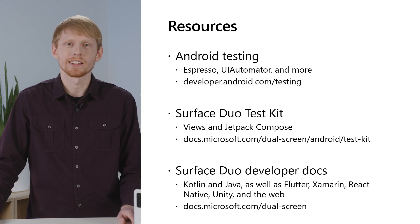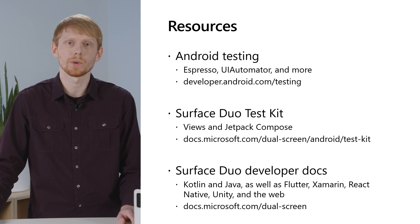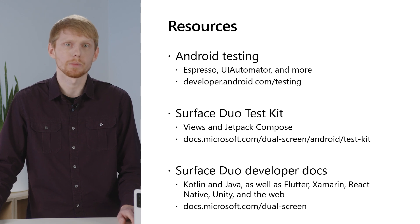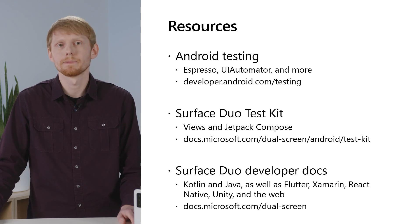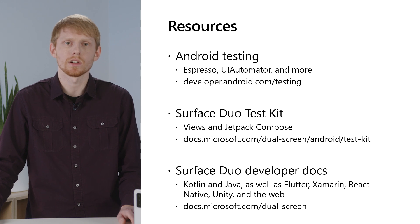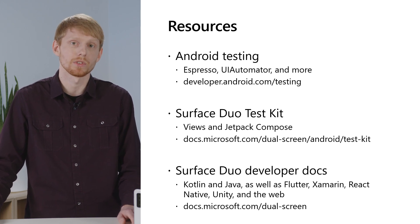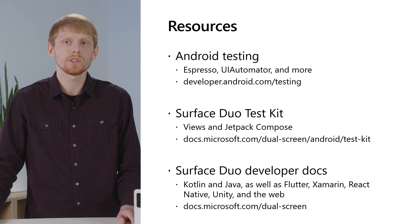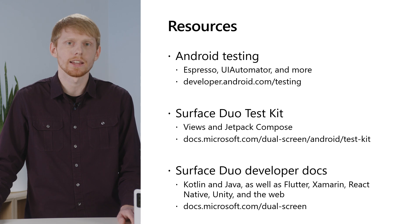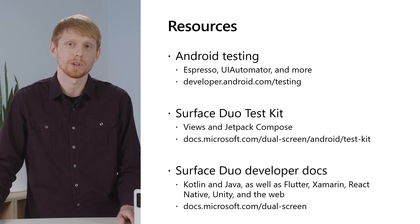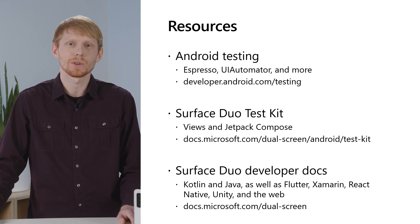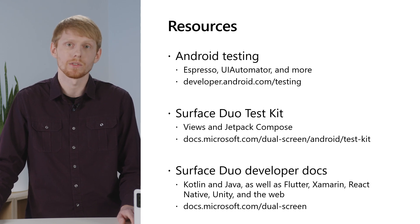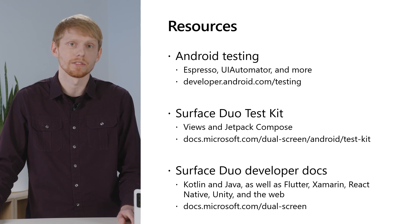UI test and UI Automator provide the foundations to write tests for both simple and complex scenarios, and the Surface Duo test kit adds dual screen specific helpers like the ability to span the app. Automated testing is a great strategy for maintaining app quality, and adding tests for form factors like dual screen and foldable devices means you can be sure your customers continue to have a great experience as your app and the device ecosystem grows. Visit developer.android.com/testing to learn more about UI testing with Espresso, UI Automator, and Jetpack Compose. To add Surface Duo tests to your app, visit our test kit on docs.microsoft.com. The test kit package contains helper methods to make testing easier, regardless of whether you use Android Views or Jetpack Compose. For dual screen design patterns and enhancing your app using Jetpack Window Manager, visit docs.microsoft.com/dual-screen. We have documentation, code examples, full sample apps, and more for Kotlin, Java, and cross-platform frameworks such as Flutter, Xamarin, React Native, and the web.